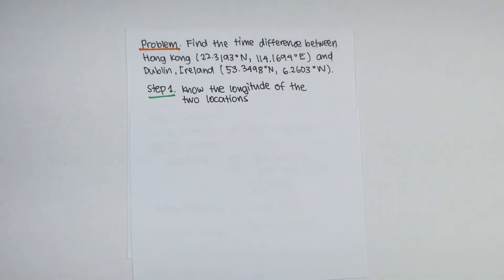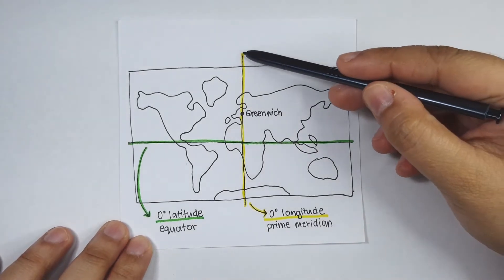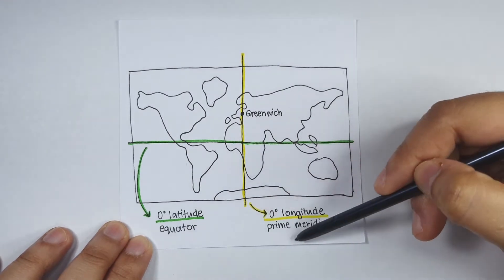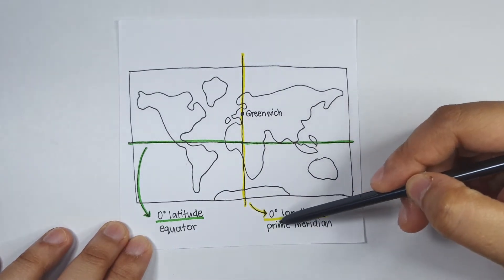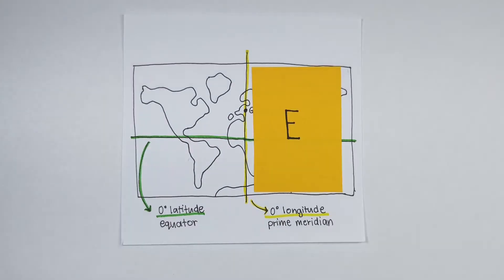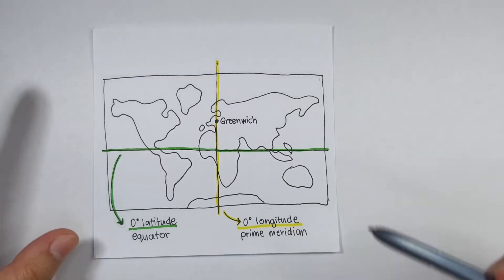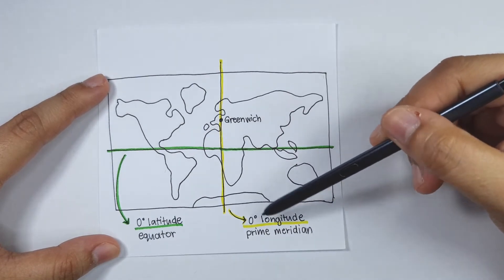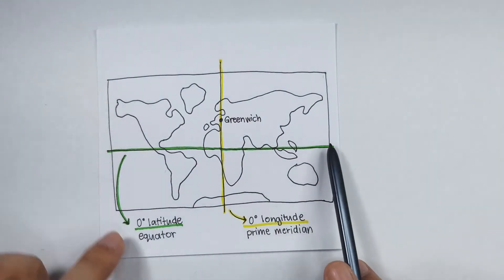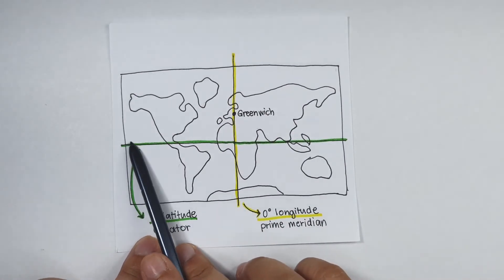Step number one is to know the longitudes of the two locations. Quick recap: longitude is the imaginary vertical line at the prime meridian where Greenwich, England is located — the prime meridian is defined to be 0 degrees. To the right of the prime meridian is east, while to the left is west. So on a world map, this goes from 0 to 180 degrees east, and from 0 to 180 degrees west.